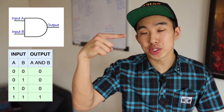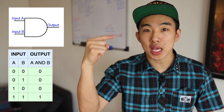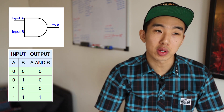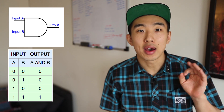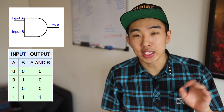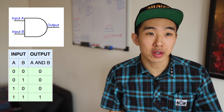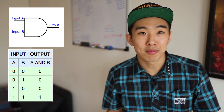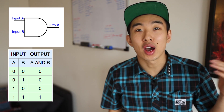Every time you see a wire in these diagrams — going into somewhere and out of somewhere — that represents a binary yes or no, or one or zero, or more realistically, electricity flowing or not flowing.